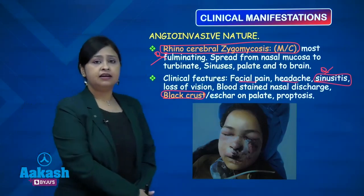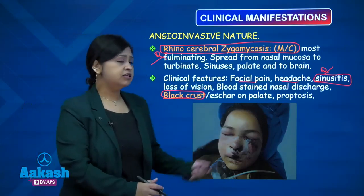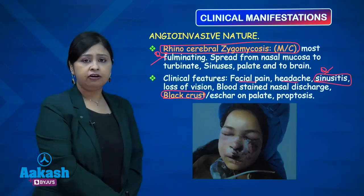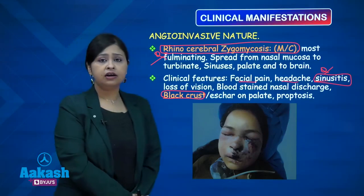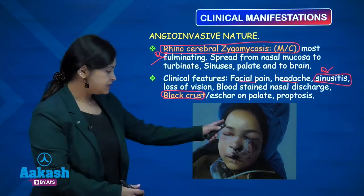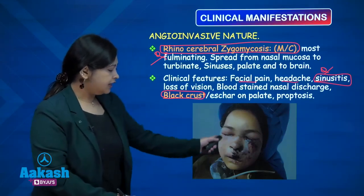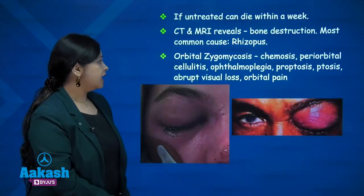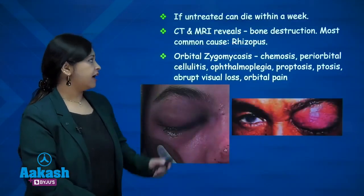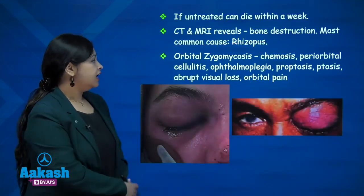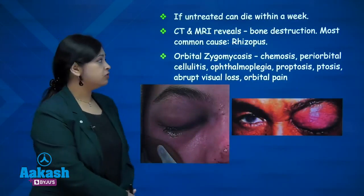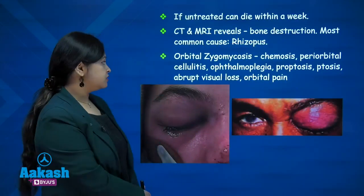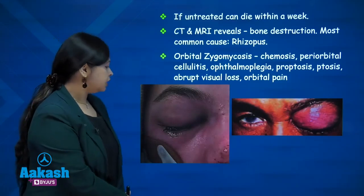Because of this black crusting, this fungus was also called 'black fungus' in the media, however they are not a black fungus. If untreated, the patient can die within a week. CT and MRI are done along with tissue biopsy sent for fungal culture and diagnosis, where there is bone destruction.